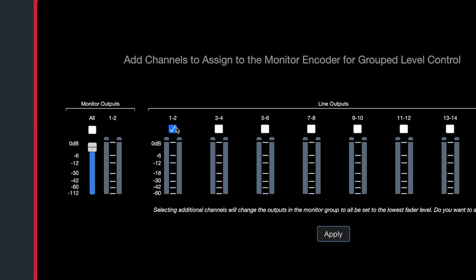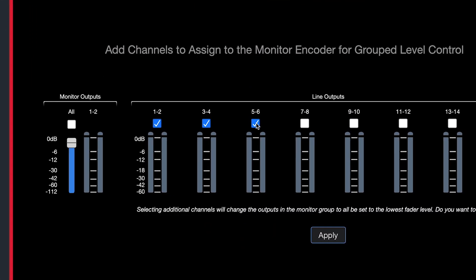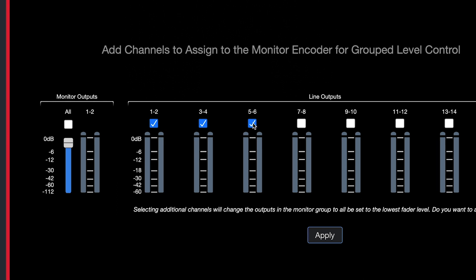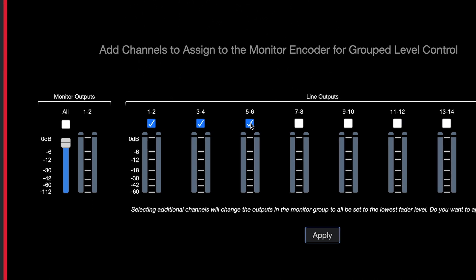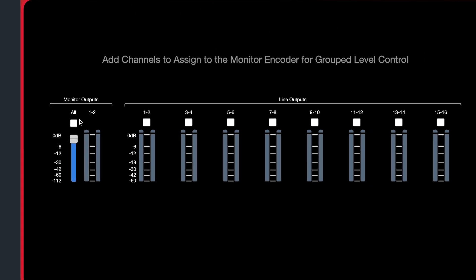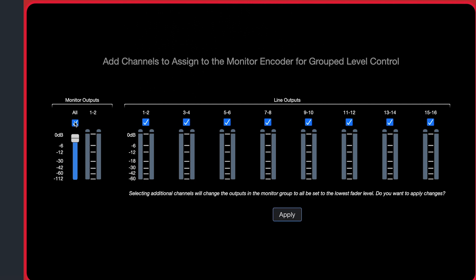Selecting the white squares above each pair of line output displays will link these outputs together and assign them to the main volume knob on the front of the device. This will then control all of your selected outputs simultaneously.